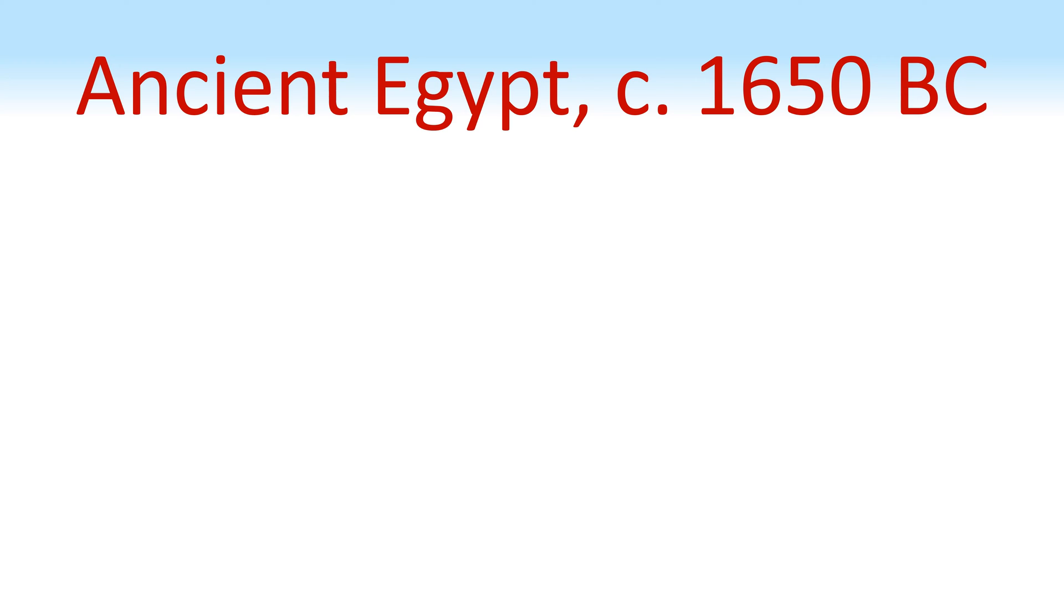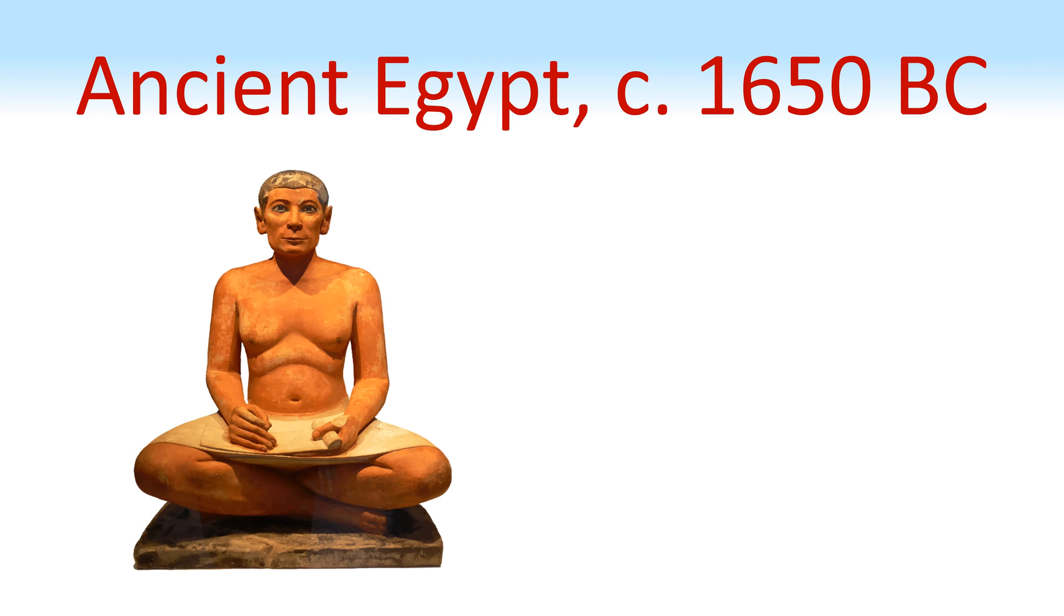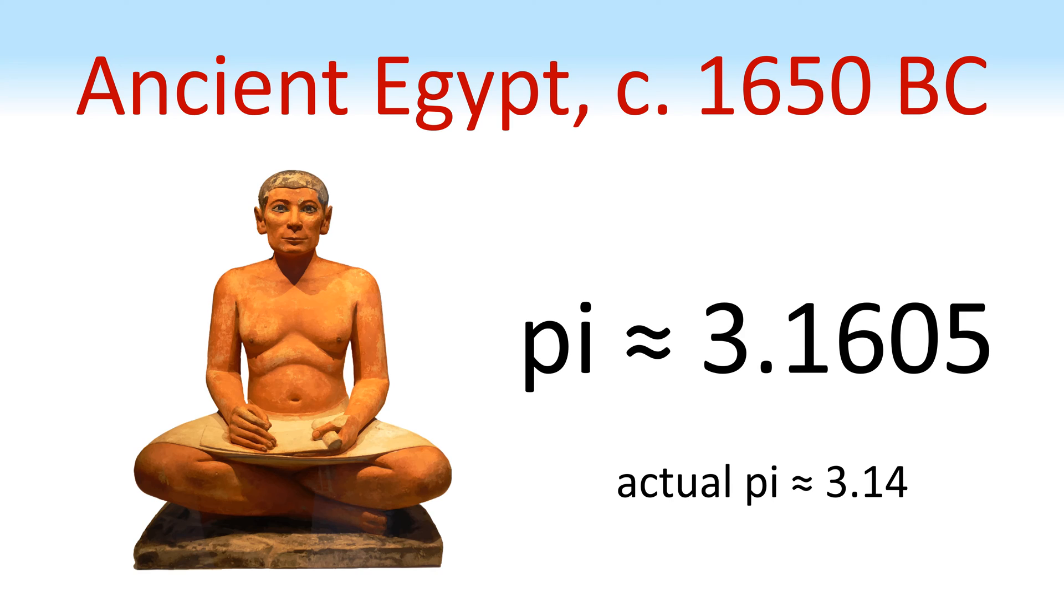Let's travel back in time to ancient Egypt around 1650 years BC. Here we find an Egyptian scribe who wrote a document known as the Rind papyrus. In this papyrus, he approximated pi to be about 3.1605. Not bad for such a long time ago, right?